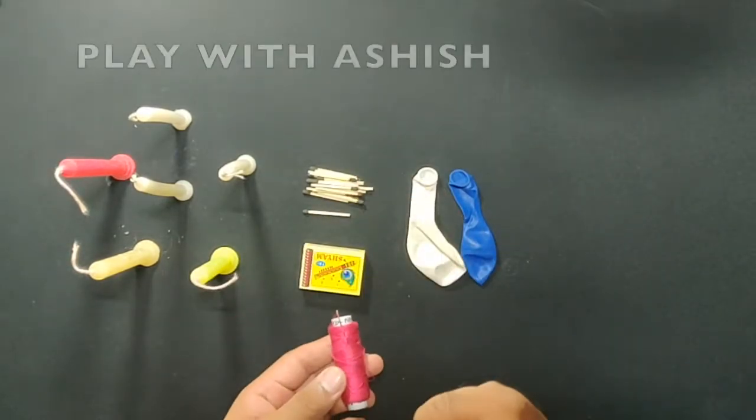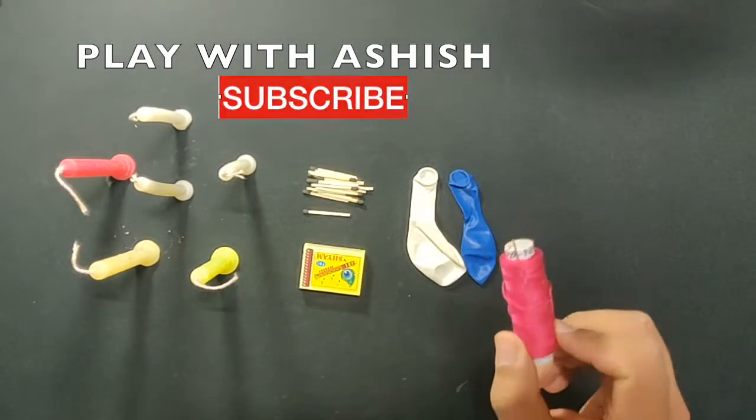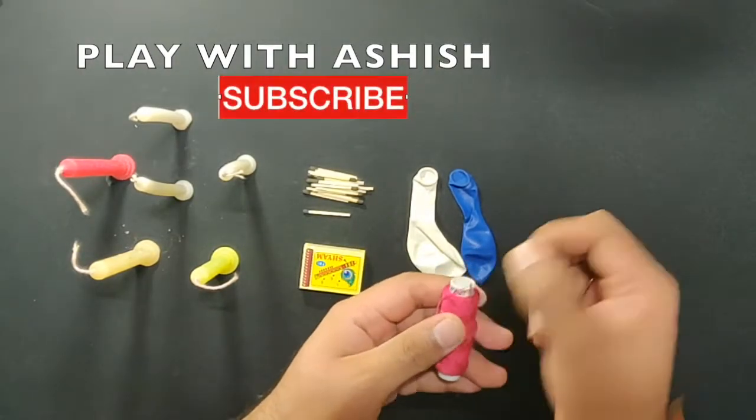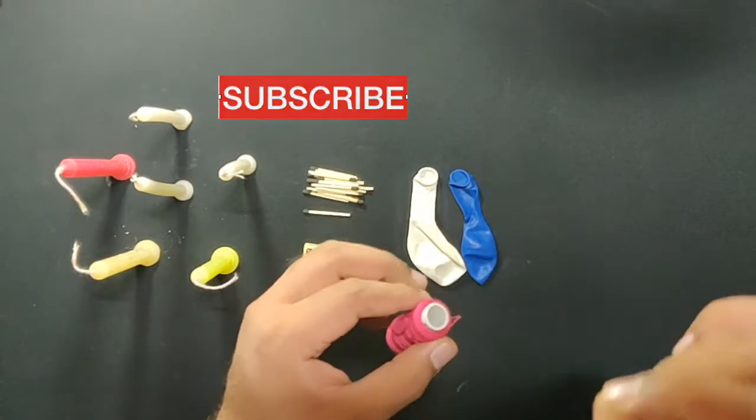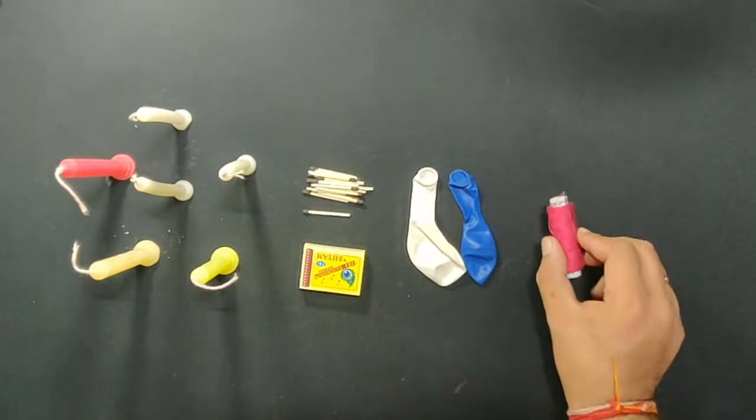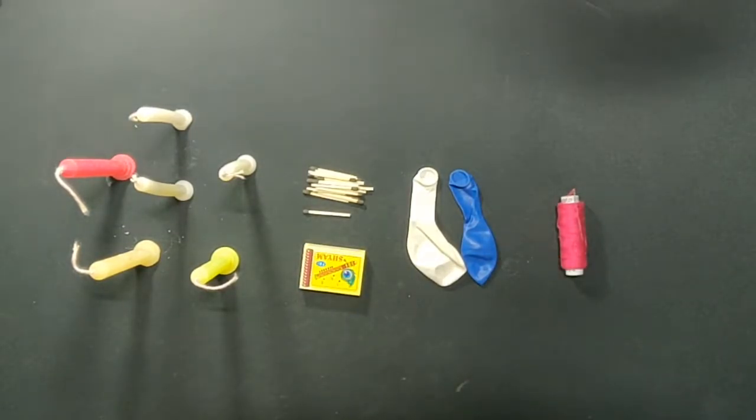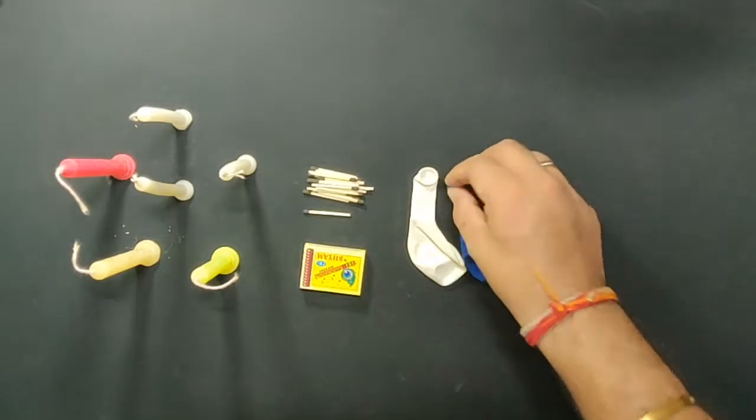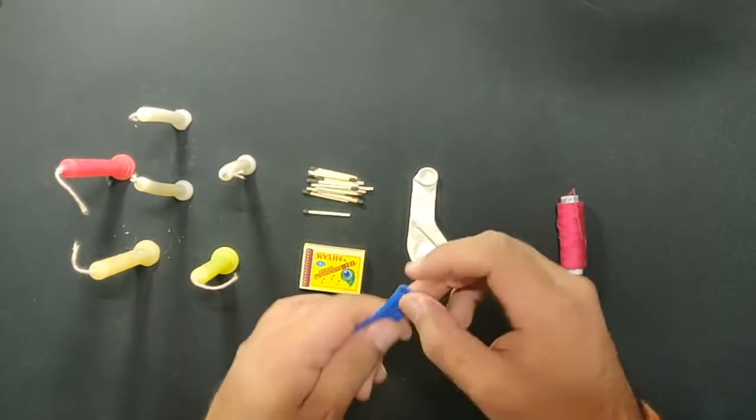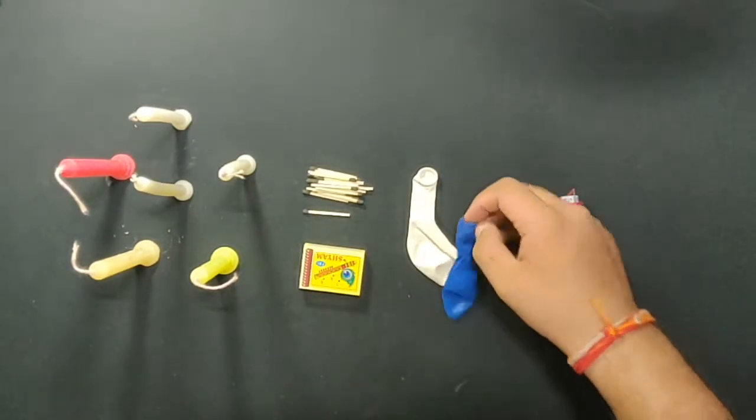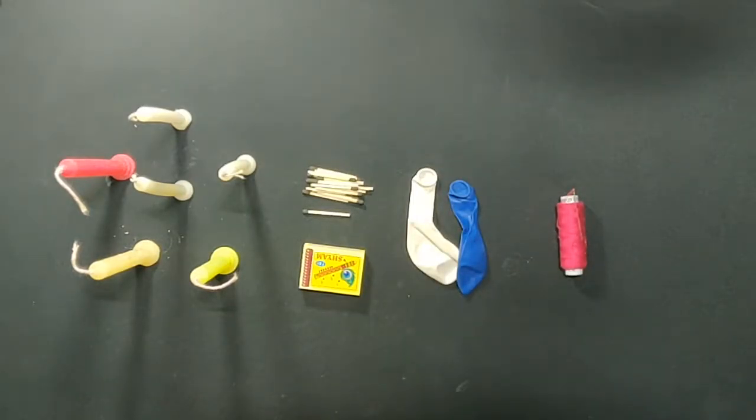The first player will run to the table. When he reaches the table, with the needle, he'll thread it through the balloon and leave it on the side. Then the second player runs. The second player will have matchstick. So he'll run to the table where he'll get the needle.